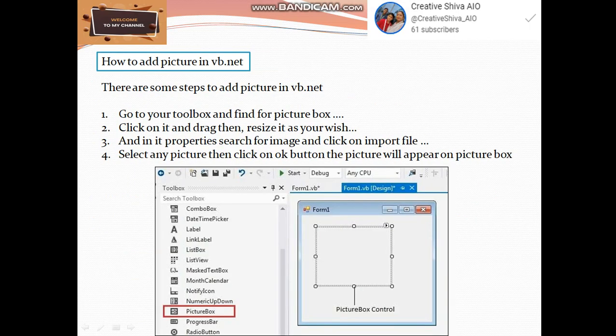How to add picture in vb.net. There are some steps to add picture in vb.net: Go to your toolbox and find for picture box. Second click on it and drag then resize it as your wish. And in its properties search for image and click on import file. Select any picture then click on ok button. The picture will appear on picture box in below. This is a pictorial example of picture box. How it looks in the frame.